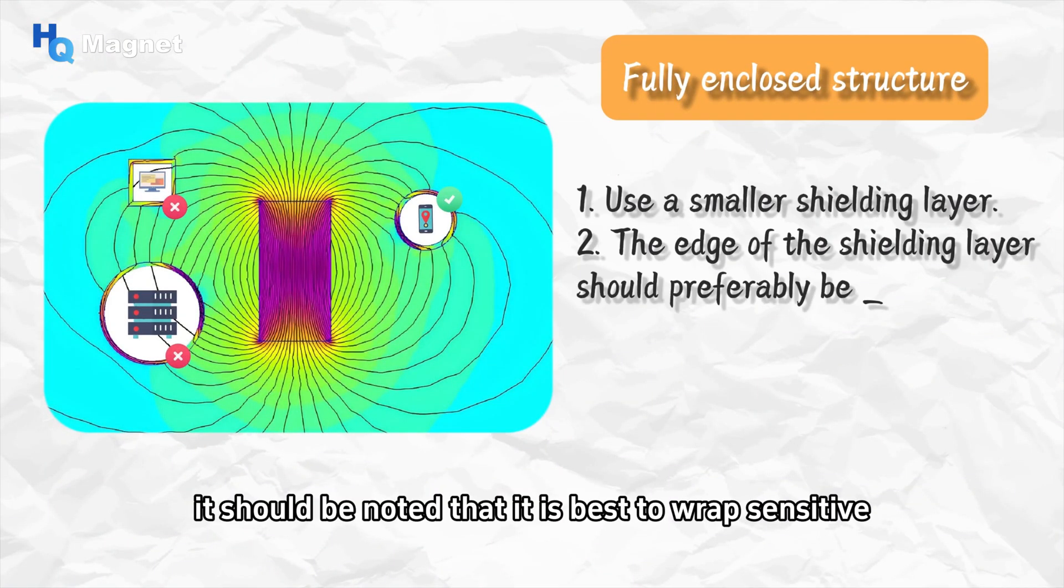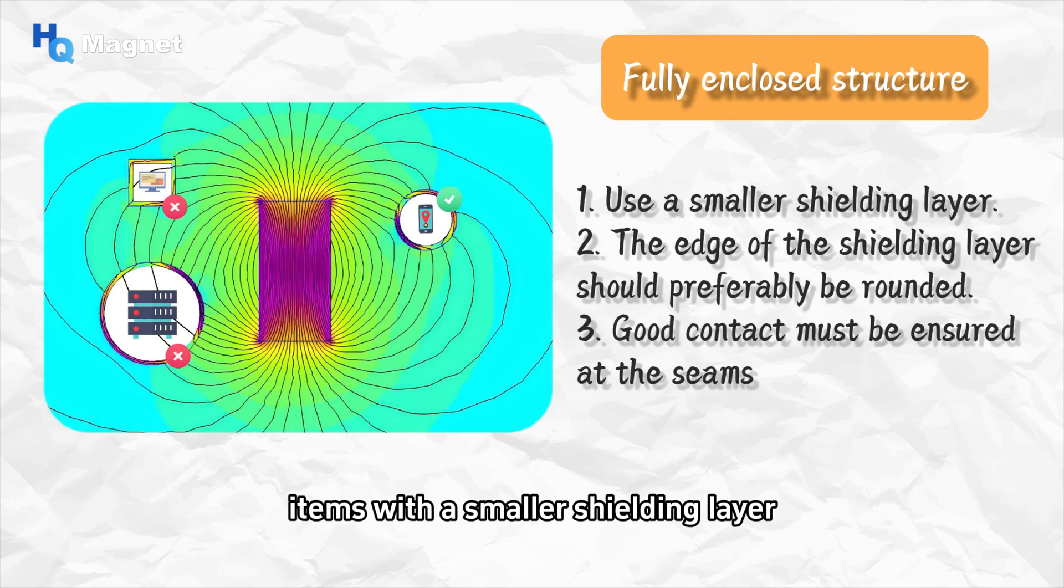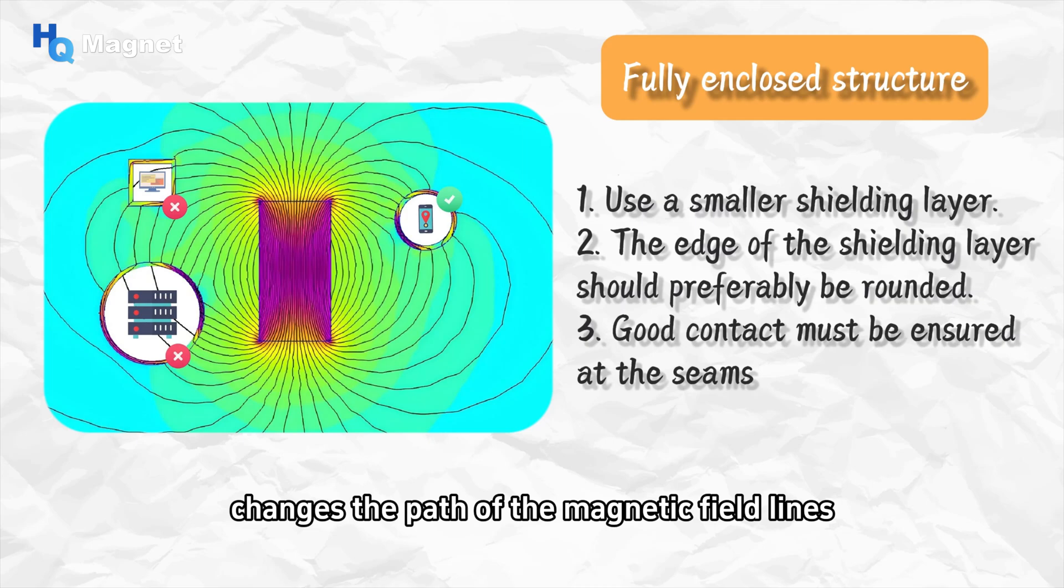It should be noted that it is best to wrap sensitive items with a smaller shielding layer. A large shielding enclosure significantly changes the path of the magnetic field lines, and for this it requires a higher magnetic permeability to achieve complete shielding.